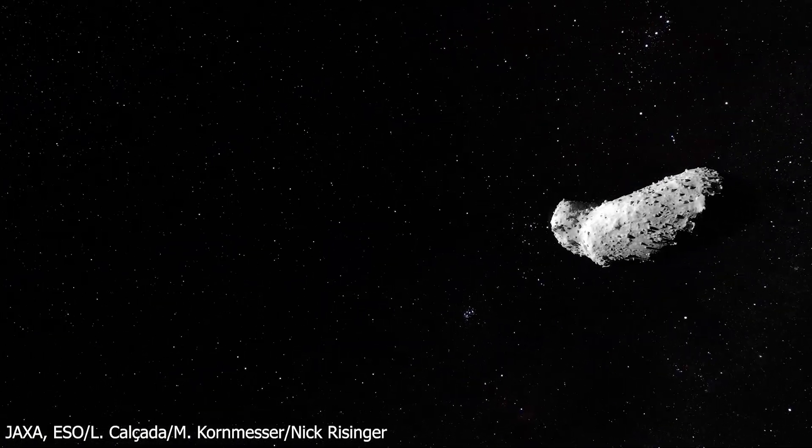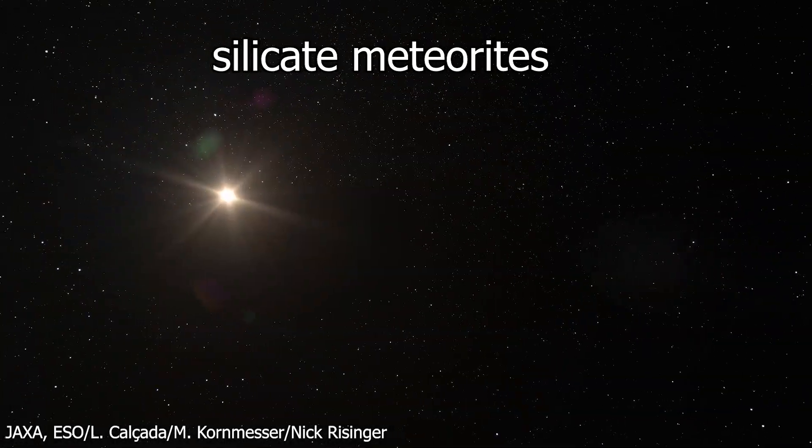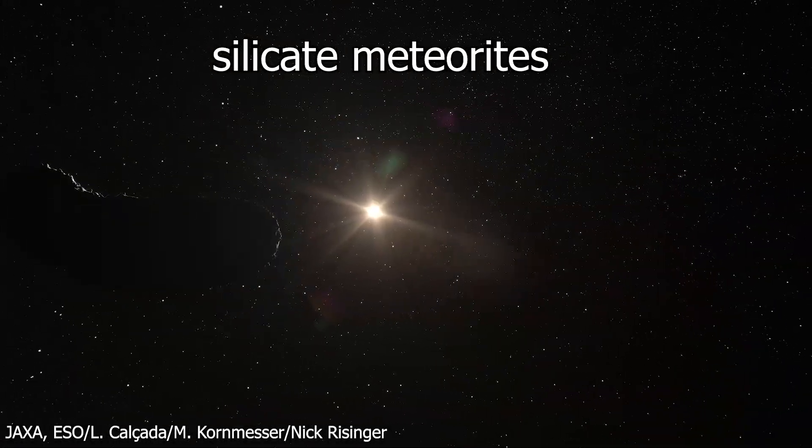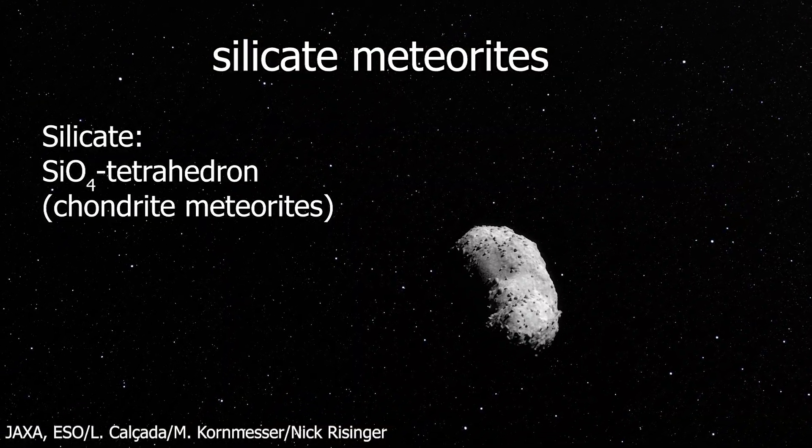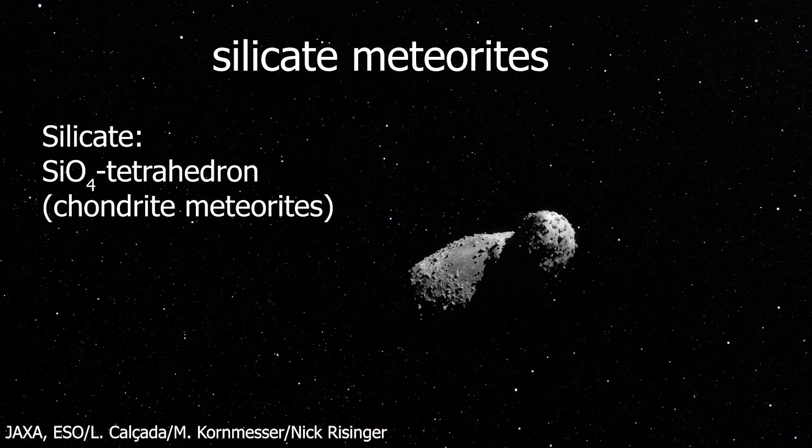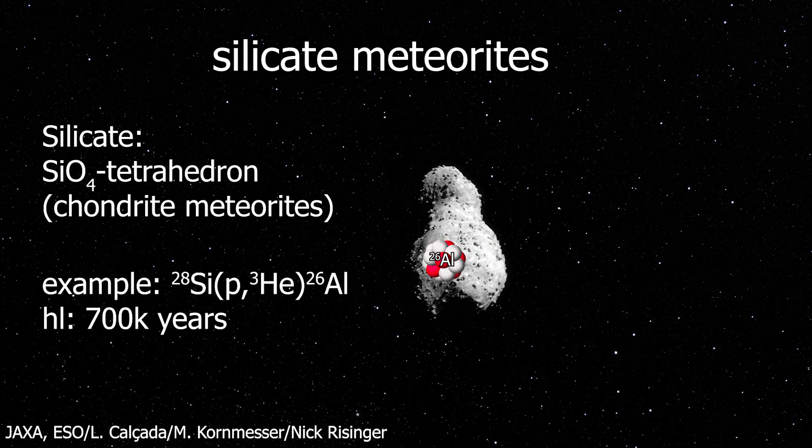So meteorites. Meteorites are roughly divided into two classes. Astronomers, please don't hit me. There are the iron meteorites and the rock meteorites. There are of course many different types of rocks, but ultimately many of them are based on silicates. In other words, silicon in combination with oxygen. These silicate or rock meteorites can contain aluminium-26 through spallation reaction.